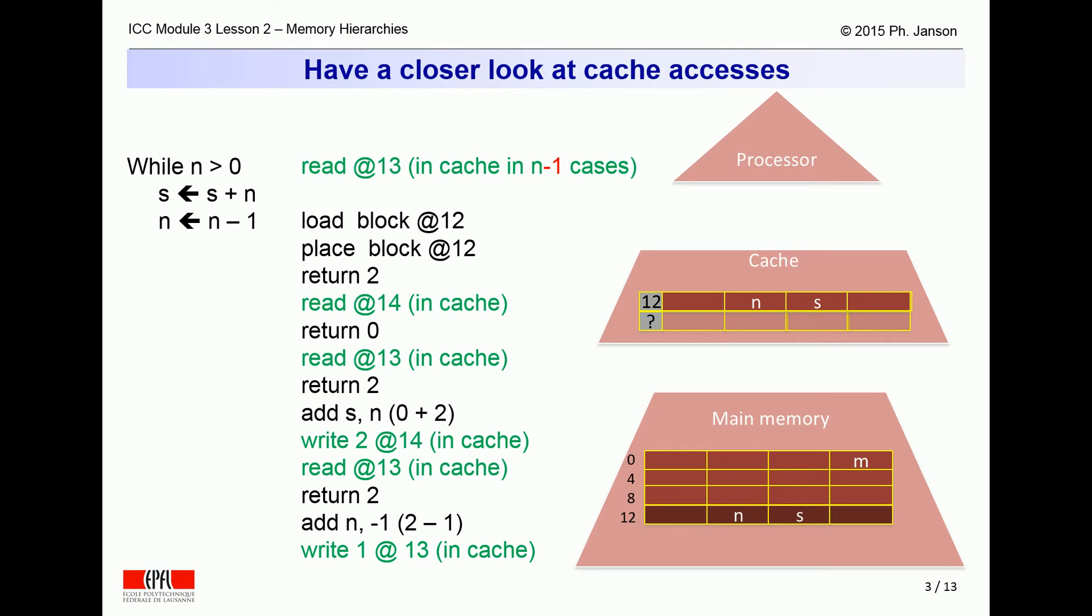Consider again the example of the previous video clip in this lesson. Observe that iteration around the loop of the integer sequence addition program would always find all the needed variables already in the cache, except in the first iteration.